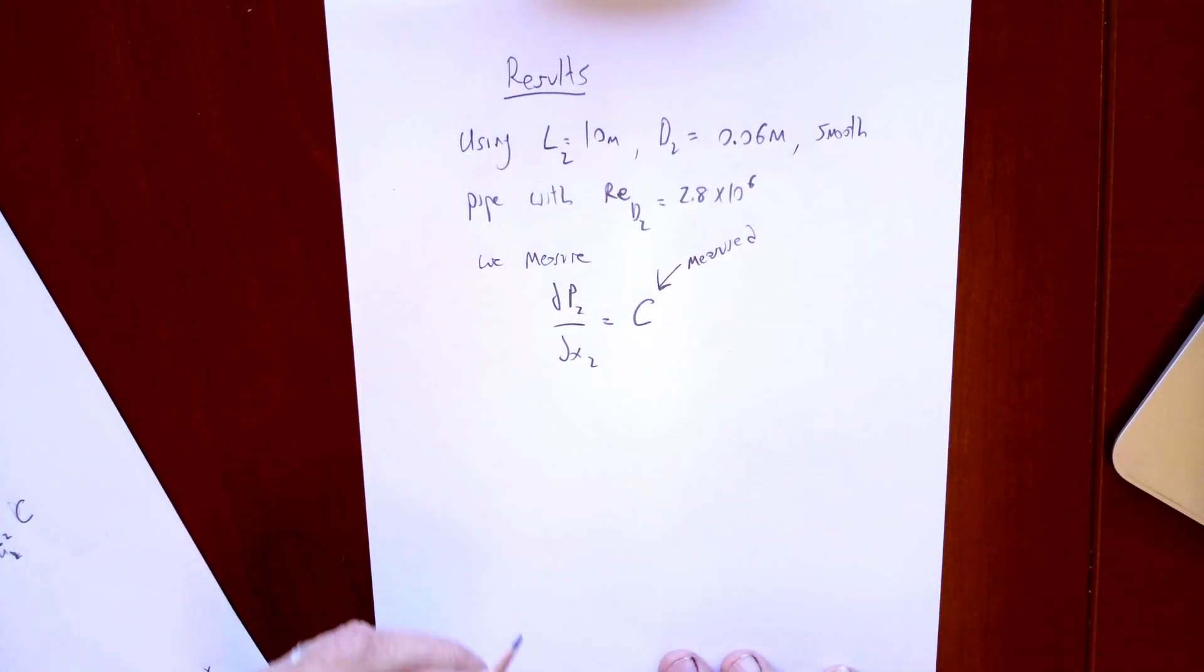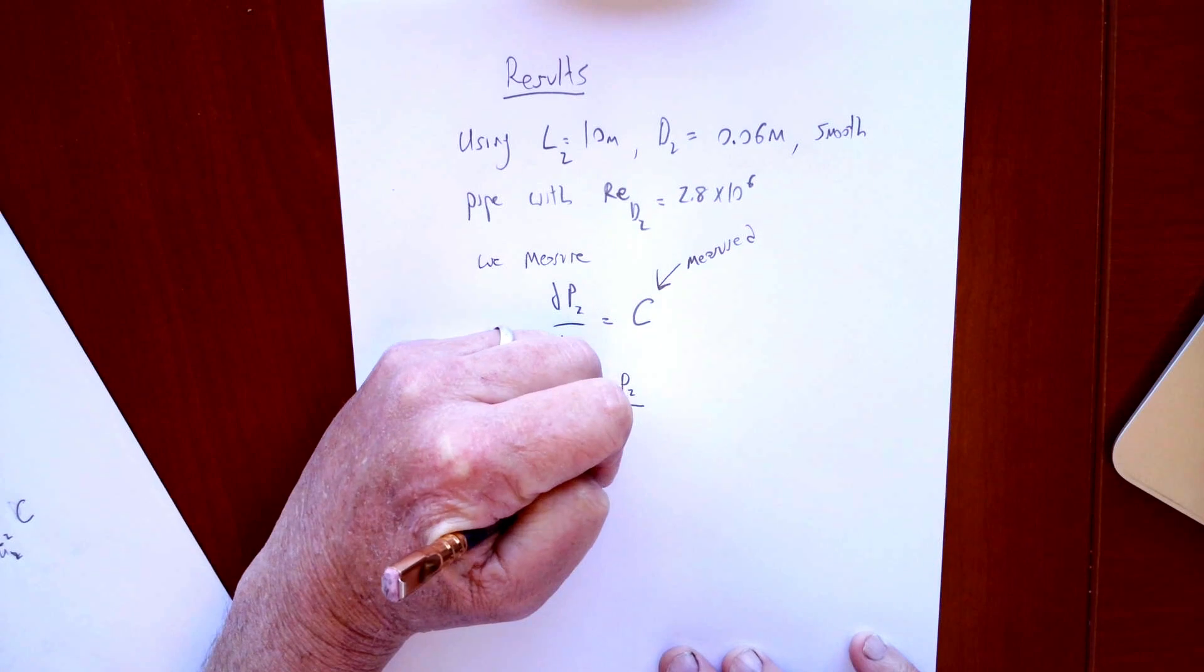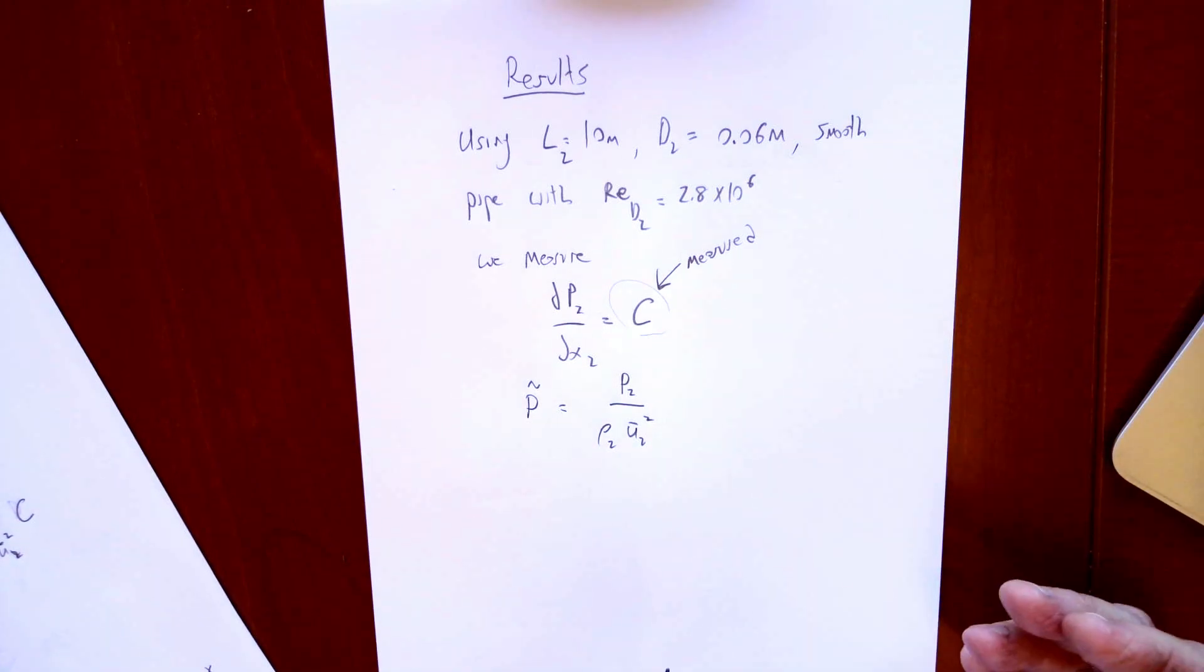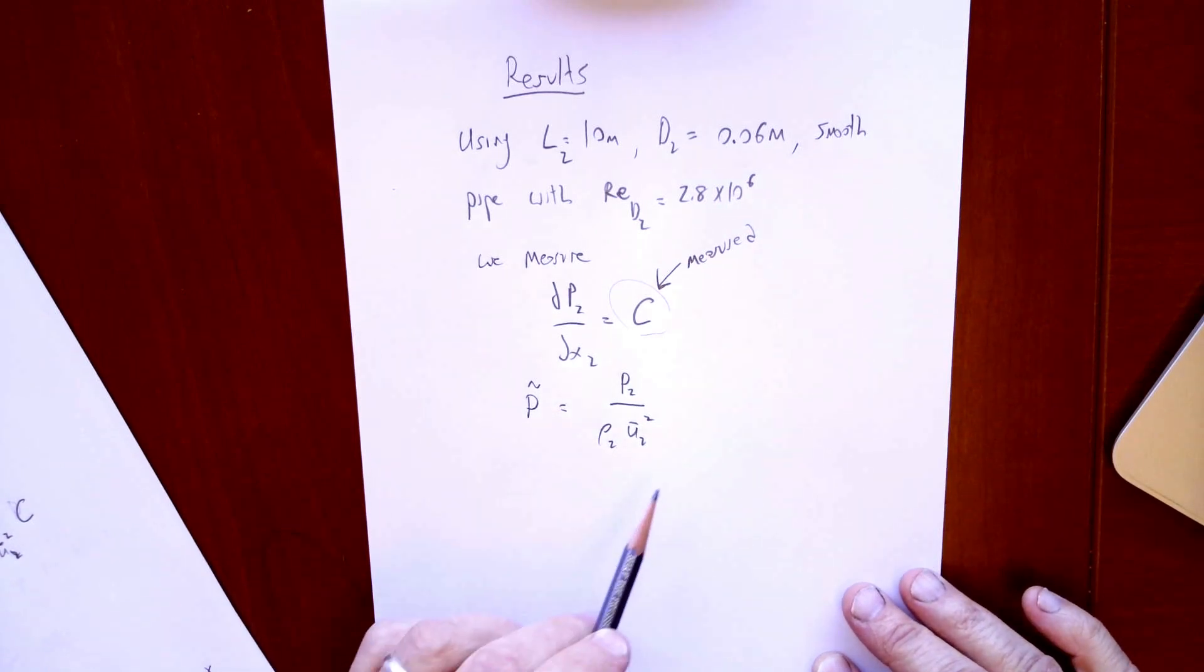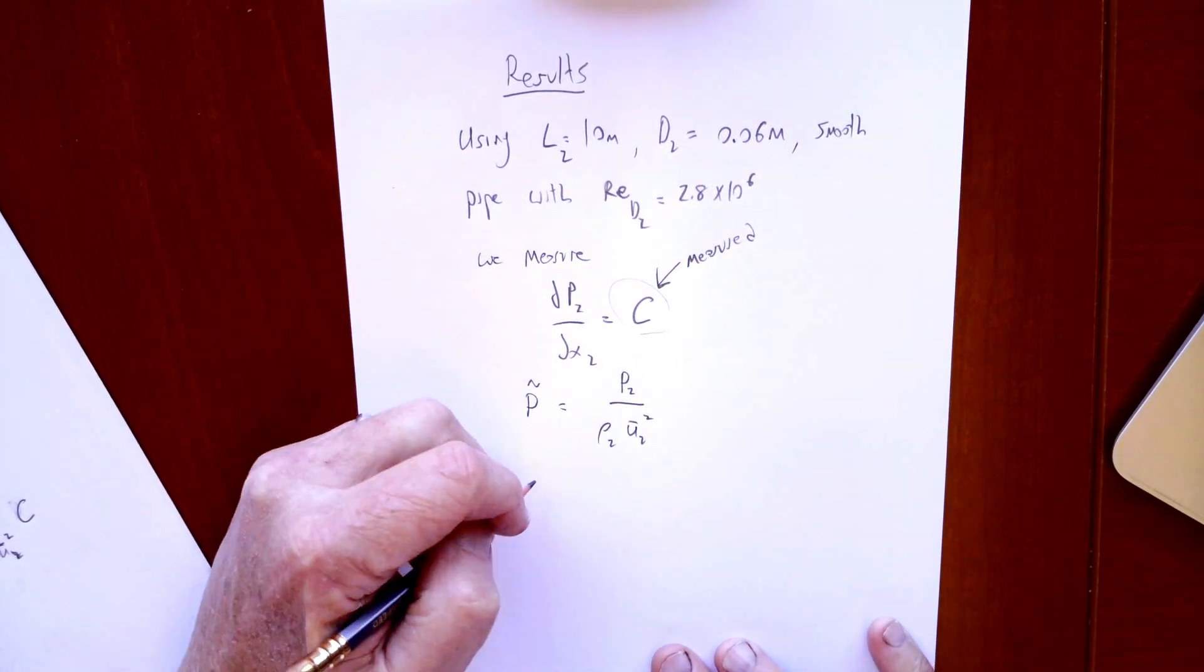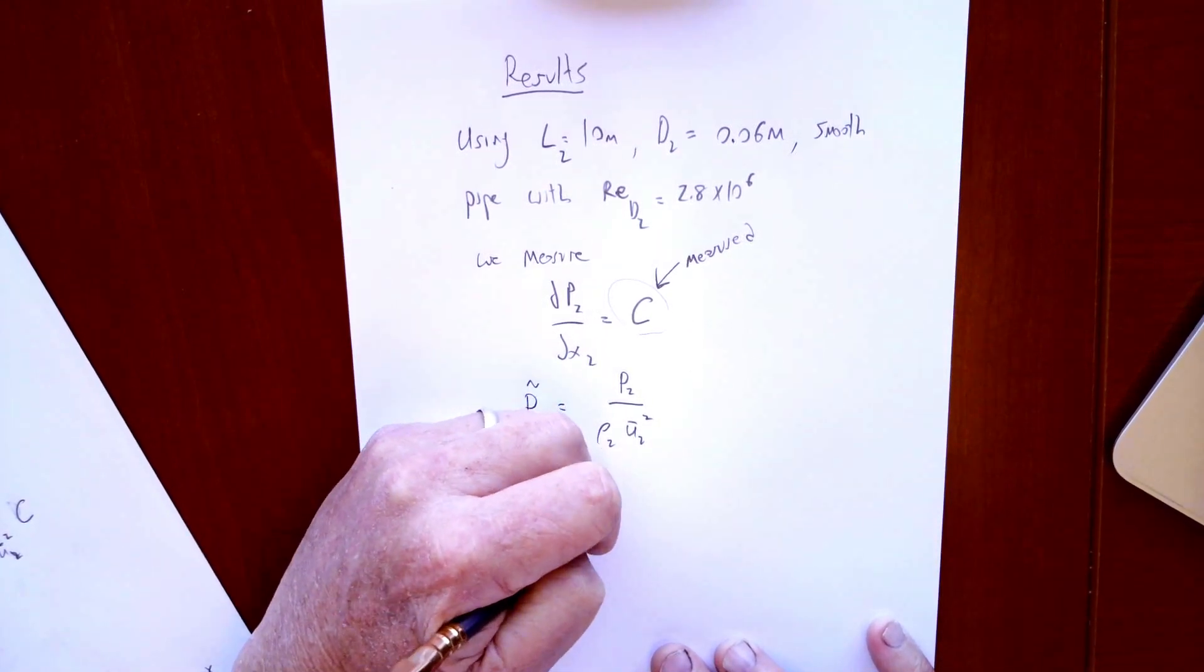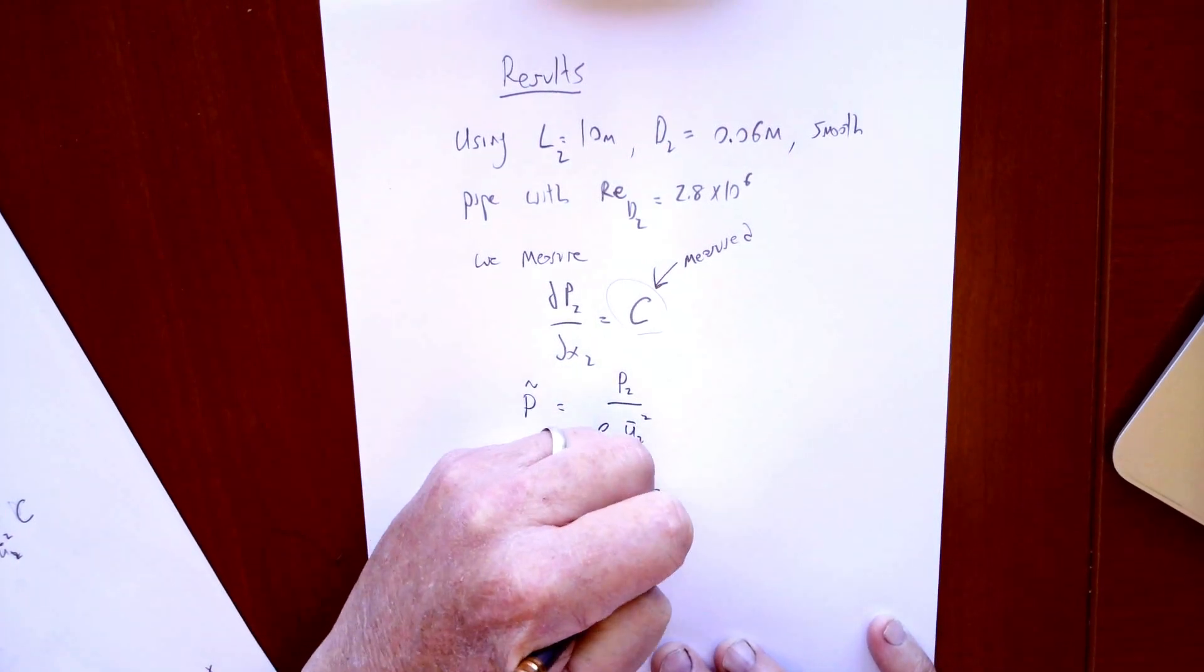Now we need to remember the definition of dimensionless pressure. So dimensionless pressure is P̄ over ρ2 U2 squared. We're trying to see how this C that we measured relates to the actual pressure drop we would see in the large pipe that we're trying to simulate. If we do that and look at the dimensionless pressure, it would be the same as DP2/DX2 times D2 over ρ2 U2 squared.